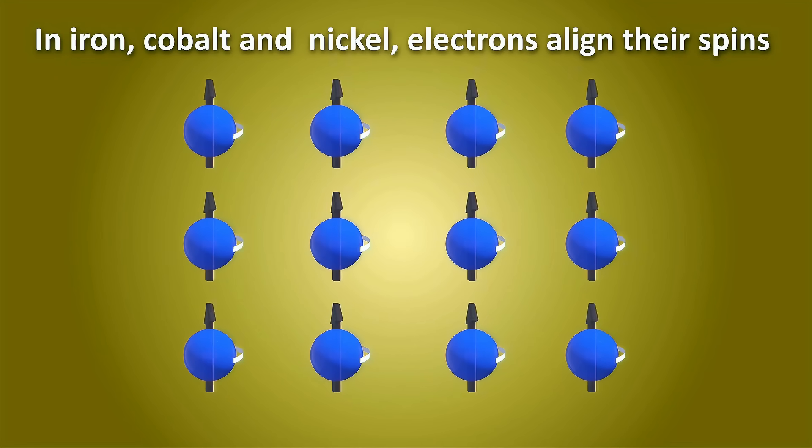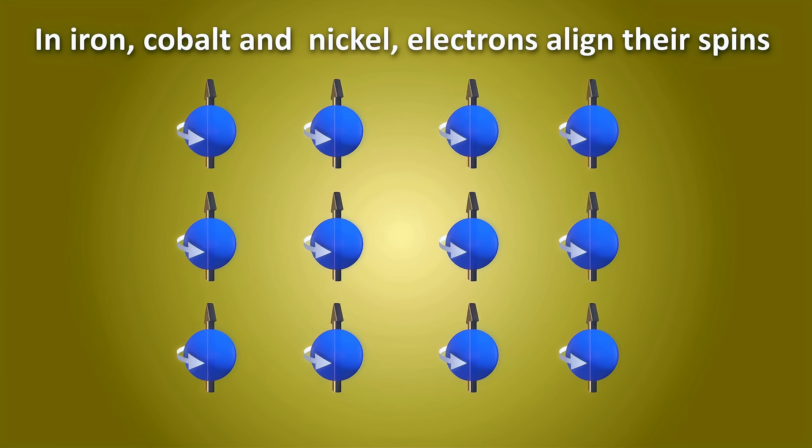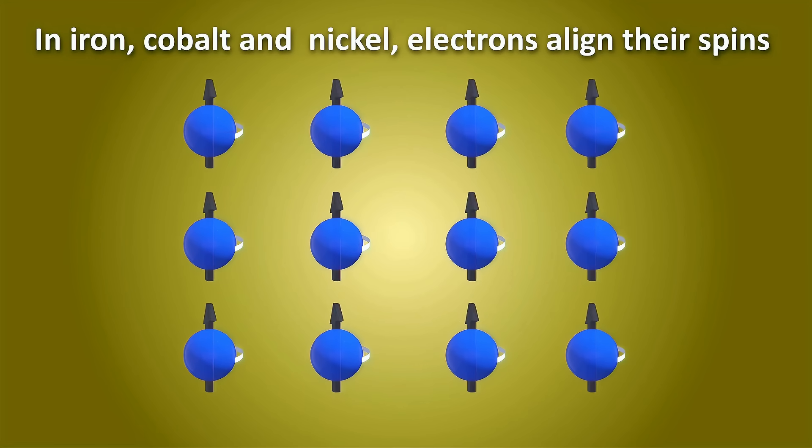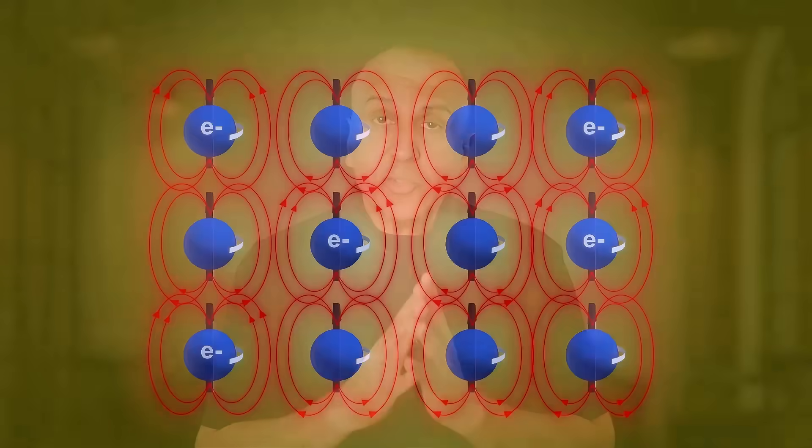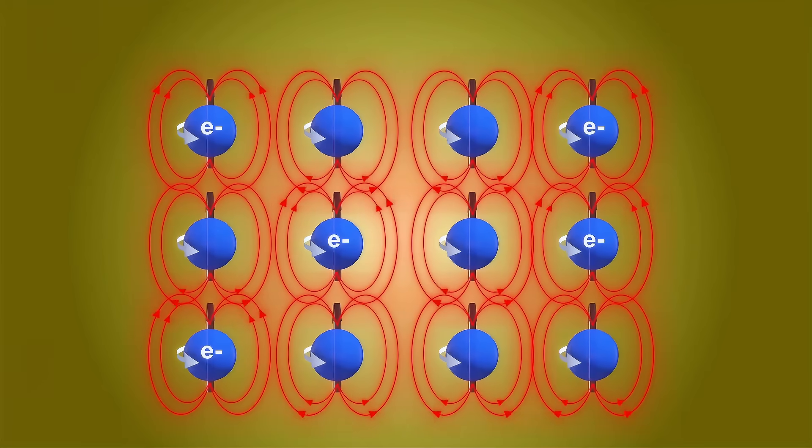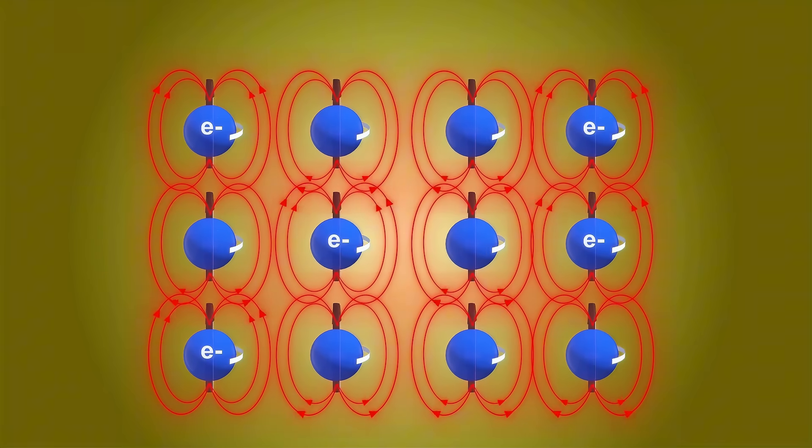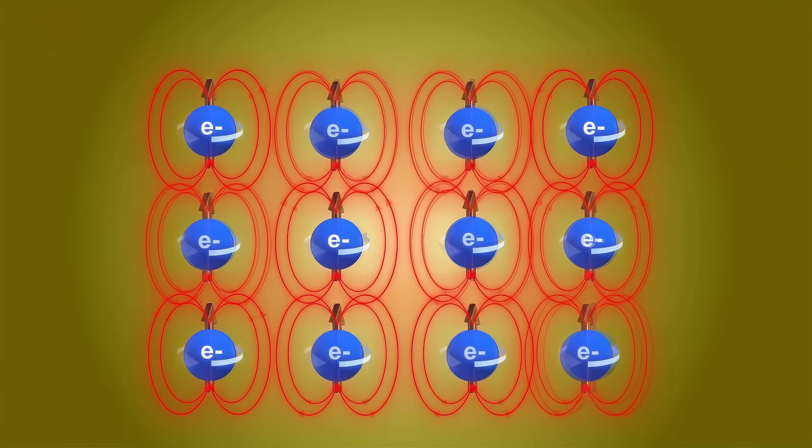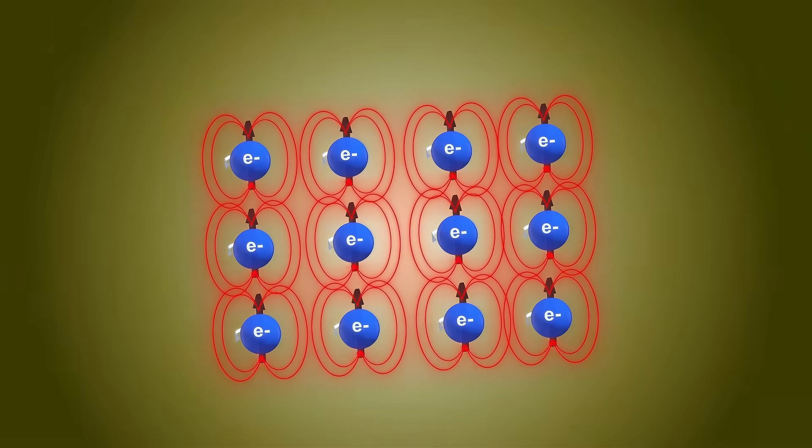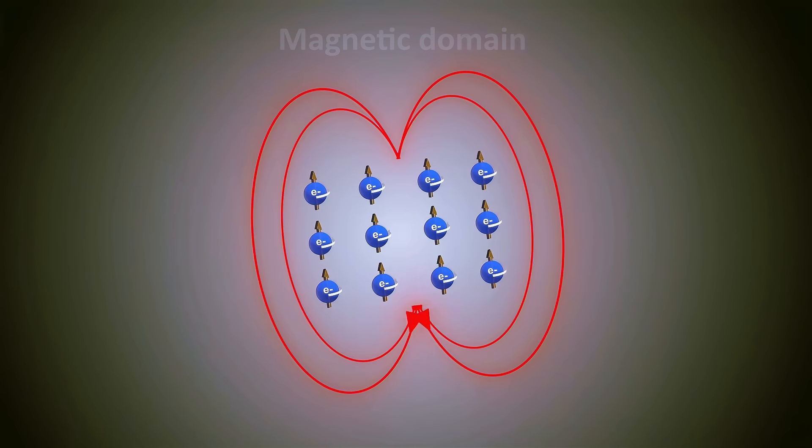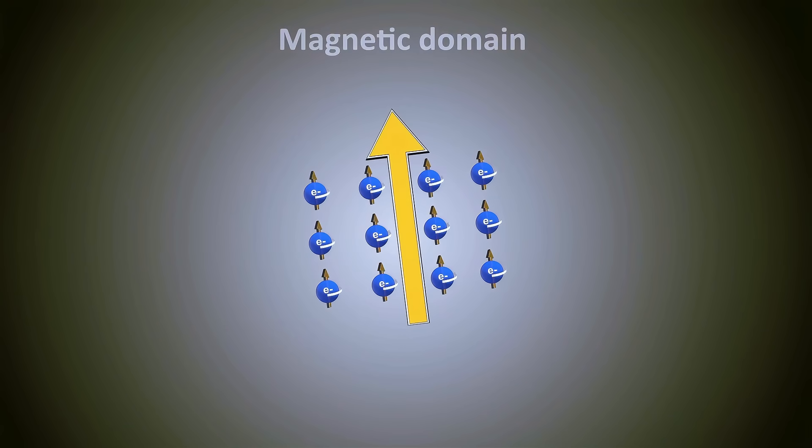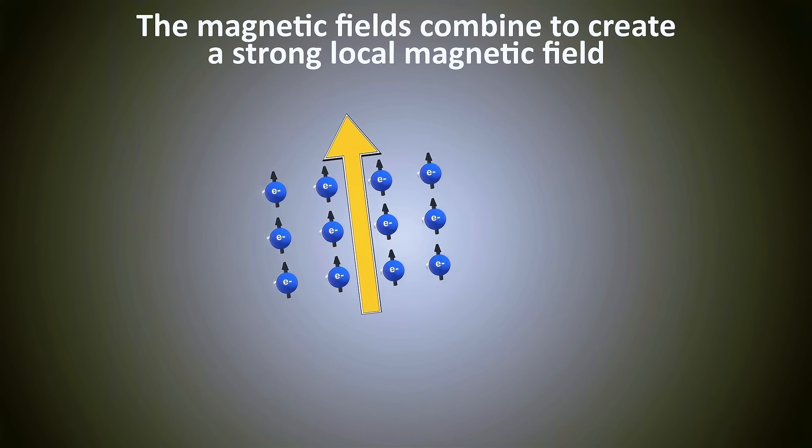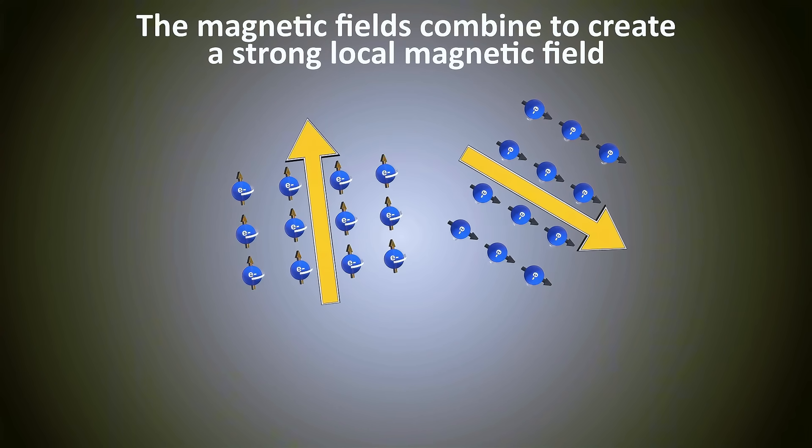In these special materials, electrons tend to align their spins with each other due to quantum mechanical interactions. I'll explain what those interactions are in a minute. When electrons align their spins in this synchronized way, their tiny magnetic fields combine, becoming stronger and stronger. Large groups of aligned electrons create microscopic regions called magnetic domains, where all electron spins point in the same direction, creating a strong local magnetic field.